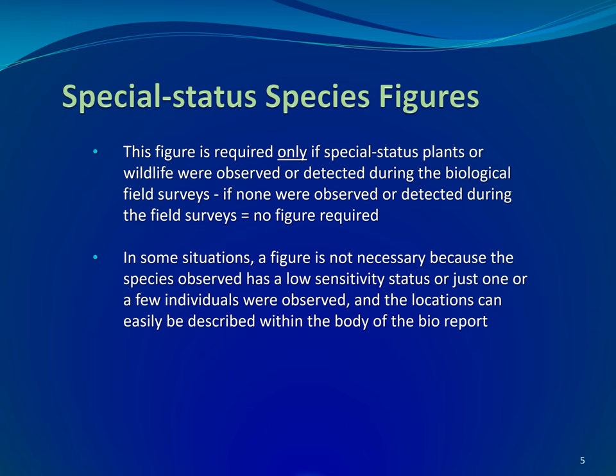For example, Allen's Hummingbird and Nuttall's Woodpeckers are birds of conservation concern. Both birds have a low sensitivity status and are common in California, so mapping them on a figure is not really necessary. Just describe the species location within the BioReport.